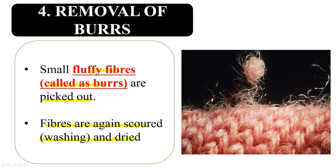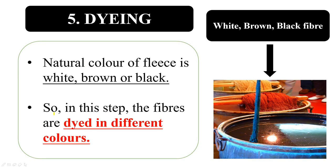So the four steps so far are: shearing, scouring, sorting, and removal of burrs. You may have seen burrs in your old woolen sweaters — those fluffy fibers. The next step is dyeing. The natural color of animal hair is white, brown, or black, but your sweaters come in different colors. These different colors are obtained by dyeing — the fibers are dyed in different colors.